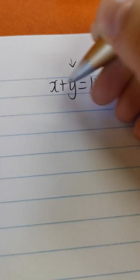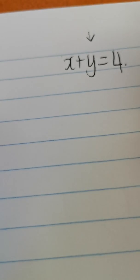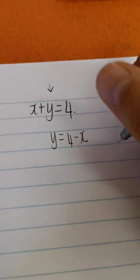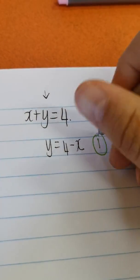I'm going to pick for this one here y. It doesn't matter which one you want from here because both of them, their coefficients are positive 1, okay? So I'm going to say y is equal to 4 minus x. And if y is equal to 4 minus x, I'm going to name this equation 1.